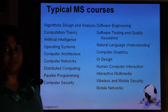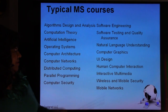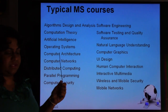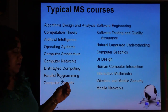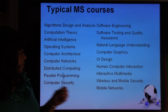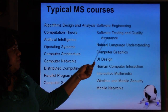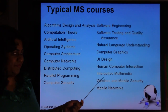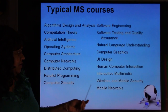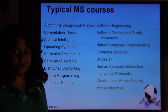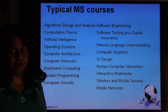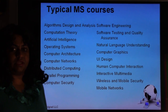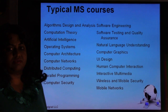Let's look at some typical courses in an MS Computer Science program: Algorithm Design and Analysis, Computation Theory, Artificial Intelligence, Operating Systems, Computer Architecture, Computer Networks, Distributed Computing, Parallel Programming, Computer Security, Software Engineering, Software Testing and Quality Assurance, Natural Language Understanding, Computer Graphics, UI Design, Human-Computer Interaction, Interactive Multimedia, Wireless and Mobile Security, and Mobile Networks. New courses are evolving all the time, but these are generic courses offered in most departments.